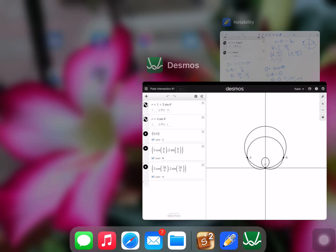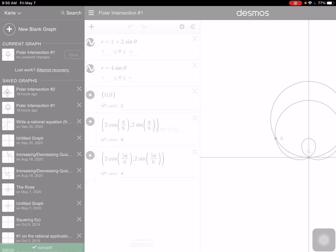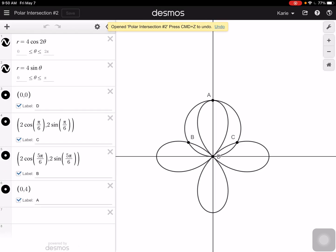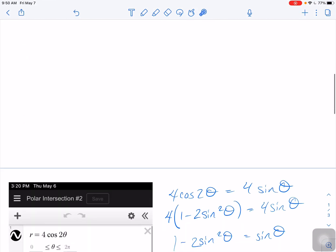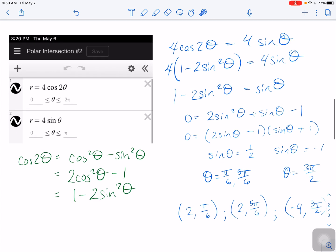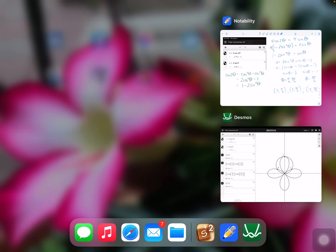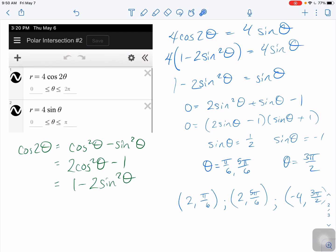There was another example that I wanted to look at with polar intersection number 2. It's a similar idea. So we can take those two equations and graph the two of them, or set them equal. Sorry, here's where they're graphed.